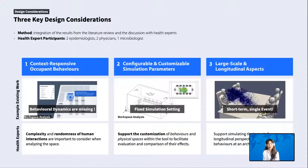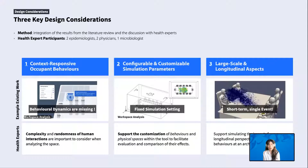As our first step, we pointed out three key design considerations that we need to take into account, based on the literature and discussions with health experts. First, whereas most existing decision support tools only check simple measures such as physical distancing, experts confirmed the importance of layering dynamic occupancy behaviors together with the building. They highlighted that the complexity and randomness of interactions within the environment are one of the major factors that lead to infection. Second, experts revealed the importance of providing flexibility for customizing human behaviors so that people can compare the results before and after interventions. Third, whereas existing solutions just tested virus transmission on small spaces like a meeting room or a single classroom over a short-term period, the experts highlighted the importance of extending the system to cover longitudinal aspects of human behaviors at a given architectural-scale environment.